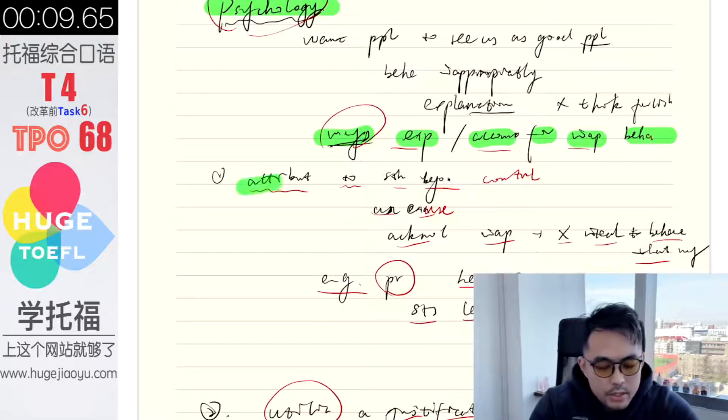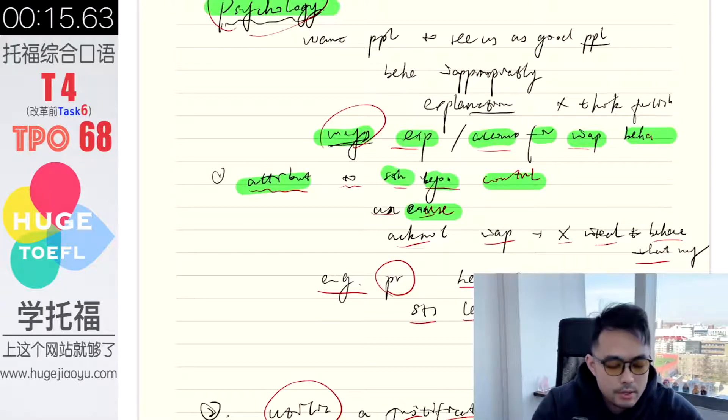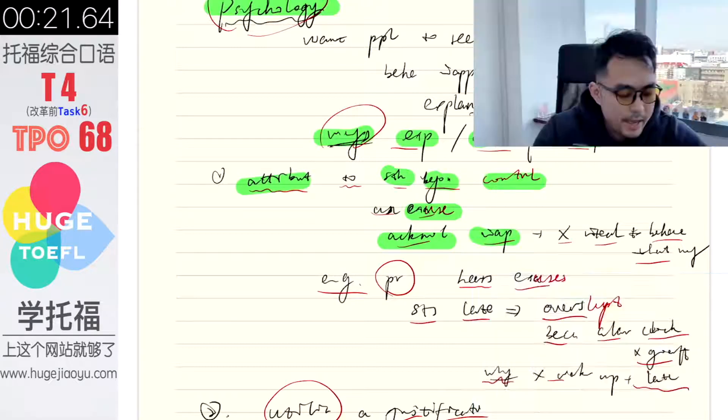The first way is to attribute the behavior to something beyond people's control, which is an excuse. By using an excuse, people acknowledge that their behavior was inappropriate, but they didn't intend to behave that way.